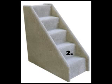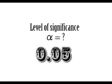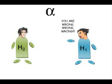Step 2: Decide on what level of significance you will reject the null hypothesis. Unless there is a good reason not to, people generally use 0.05 as the cut-off value, also known as the alpha value. This is the probability that you will say that the null hypothesis is wrong when really it is correct.